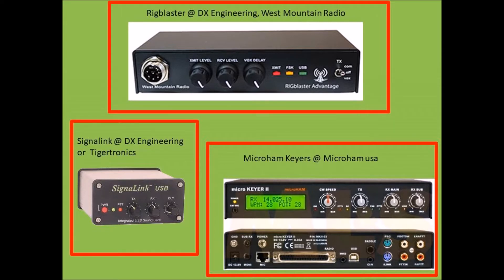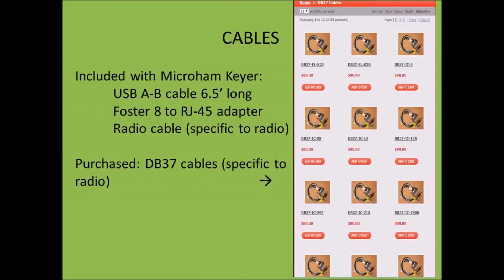These can be found — I listed the stores where you can get them. What I'm going to use is a Micro Ham keyer, and here are the cables that were included along with what I had to purchase specific to my radio.